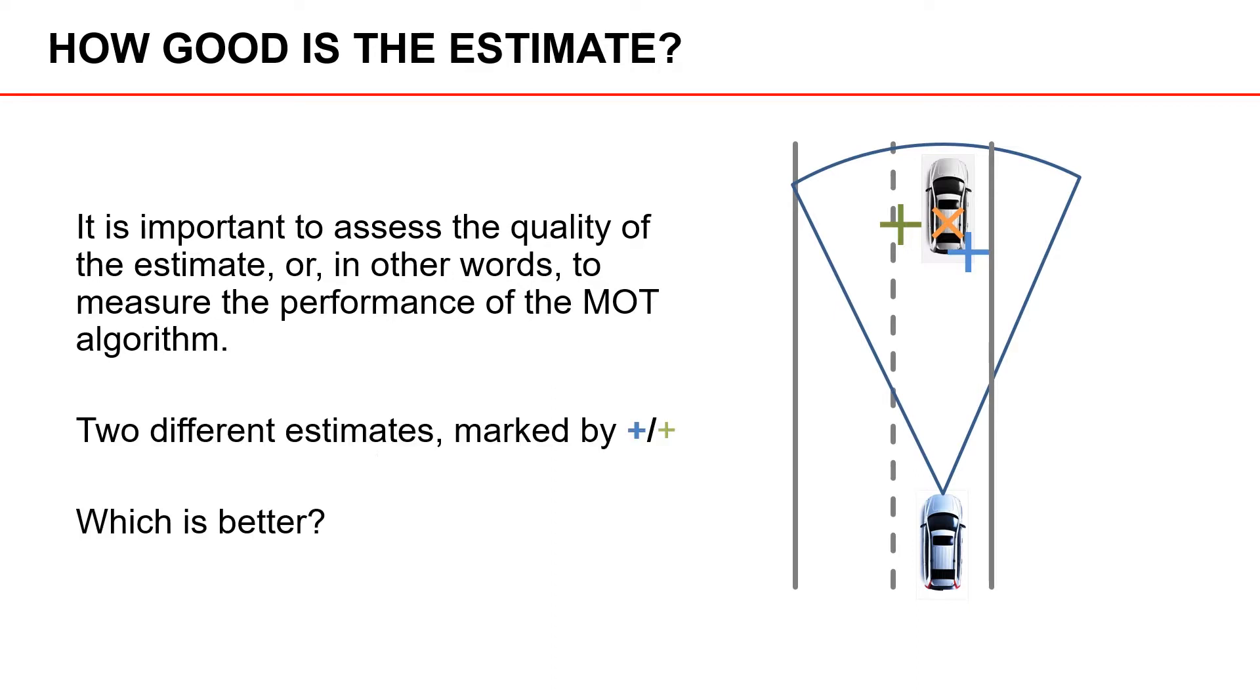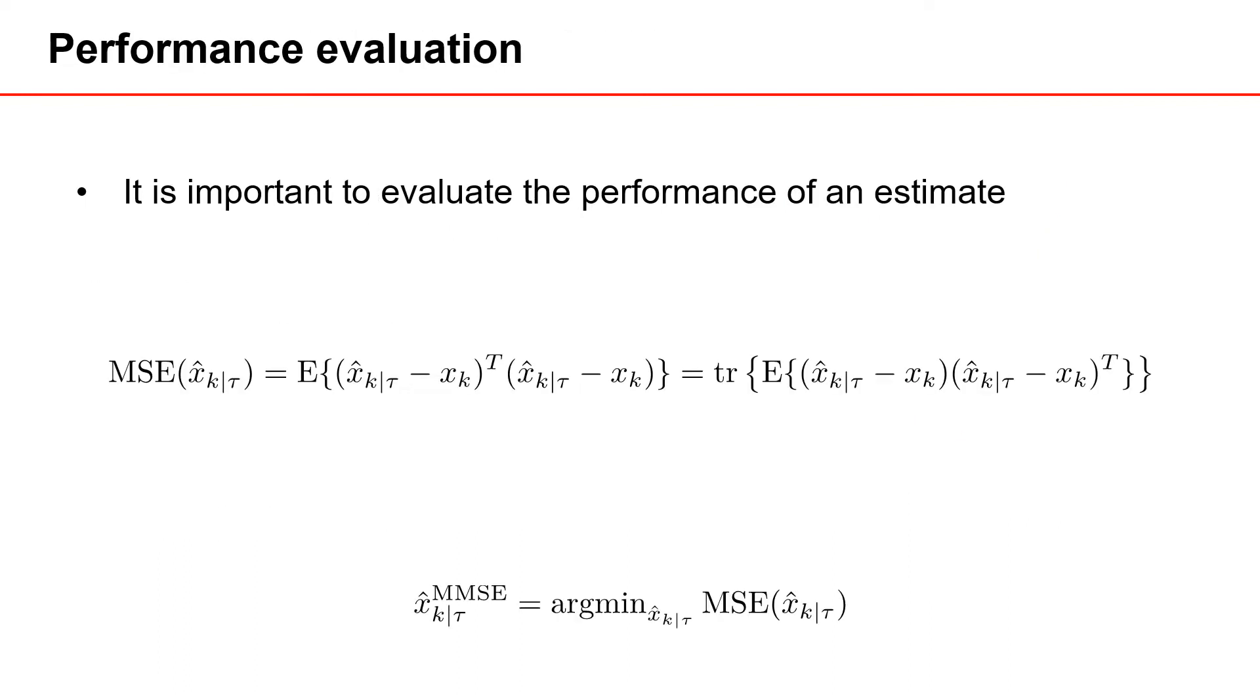If we have multiple objects, which of course is the typical case in multiple object tracking, then we need to ask ourselves, how good are the estimates that we have for these multiple objects? And to evaluate the performance of multiple object tracking, we need to be able to evaluate the performance of a single estimate.